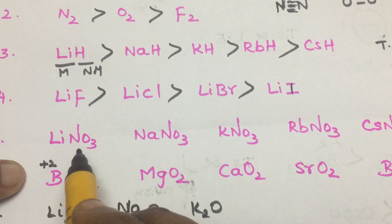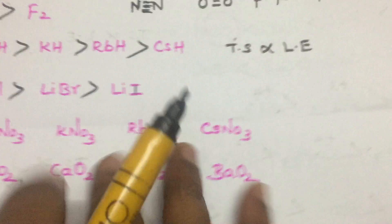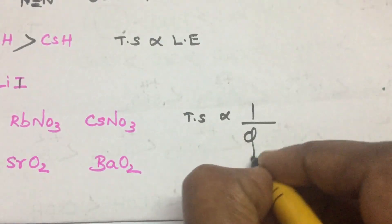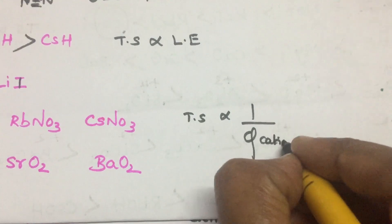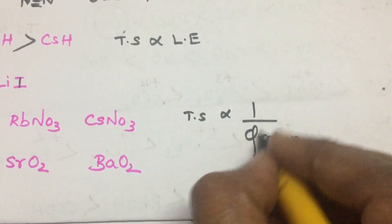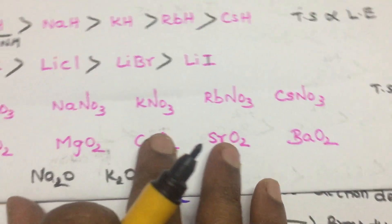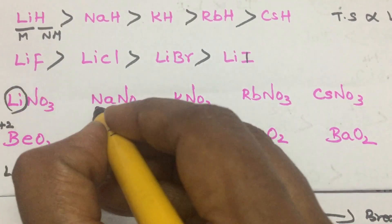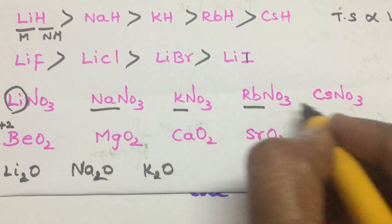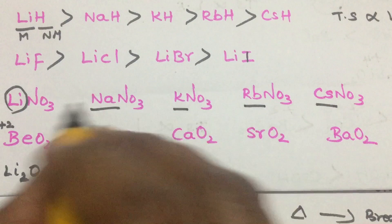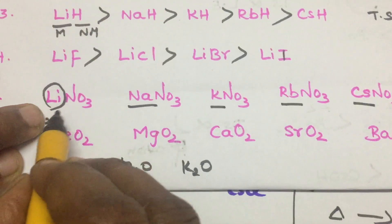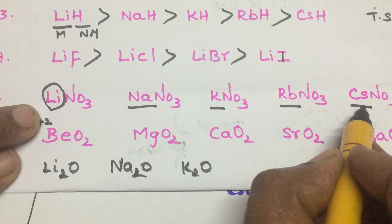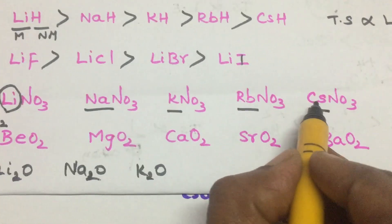This compound comes under polyatomic. Here you apply the rule that thermal stability is inversely proportional to the polarizing power of the cation. Comparing lithium, sodium, potassium, rubidium, and cesium: the smaller the cation, the more polarizing power; the bigger the cation, the less polarizing power.